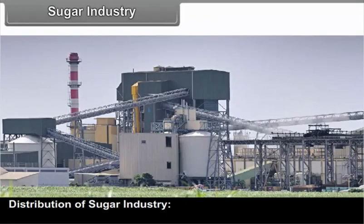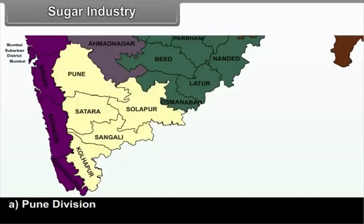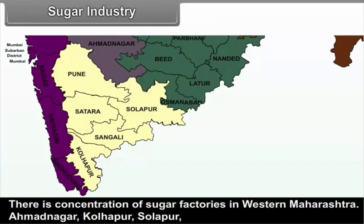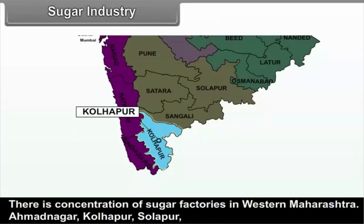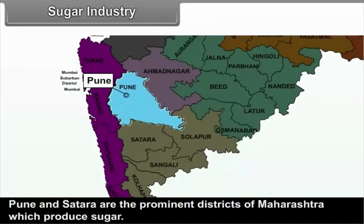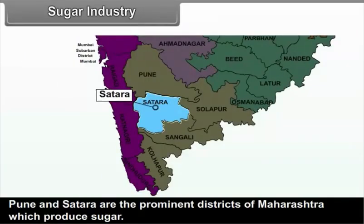Distribution of sugar industry: A. Pune Division — There is a concentration of sugar factories in Western Maharashtra. Ahmednagar, Kolhapur, Solapur, Pune and Satara are the prominent districts of Maharashtra which produce sugar. B. Nasik Division — Sugarcane is produced in the Tapi Basin. Therefore, sugarcane is available on a large scale to the sugar industry. Sugar industries are set up in Dhule, Jalgao and Nandurbar districts.